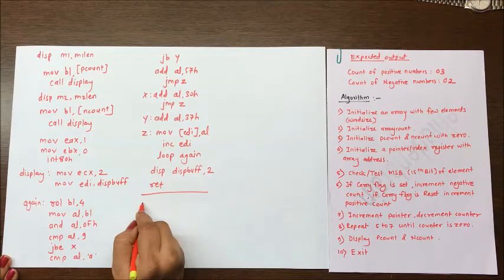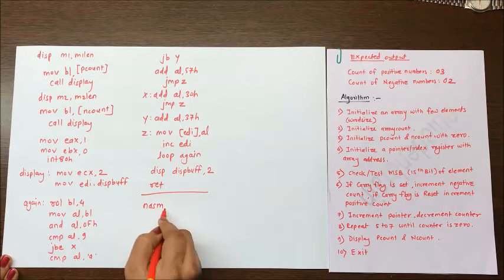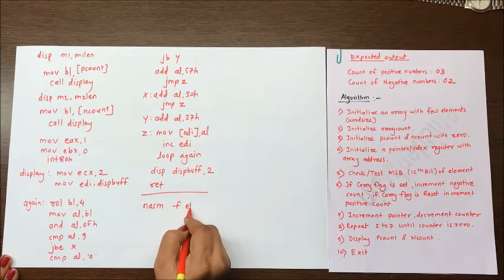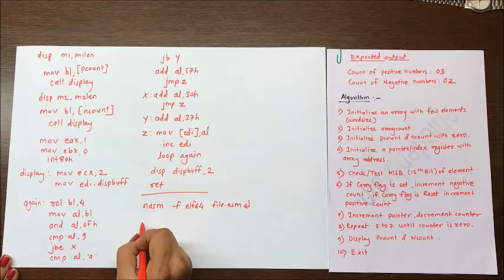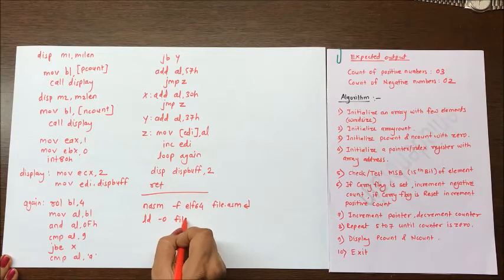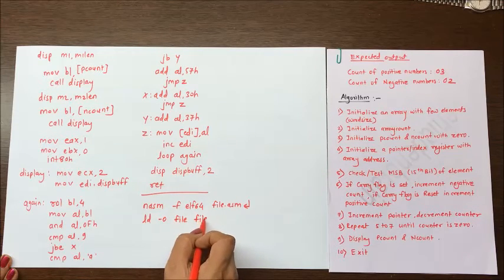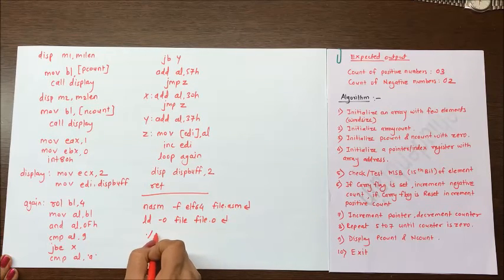So this is the program. To execute this program, the instruction for execution are NASM hyphen F, ELF 64, whatever is the filename dot ASM. Next instruction is LD hyphen O, filename only, space, filename dot O.